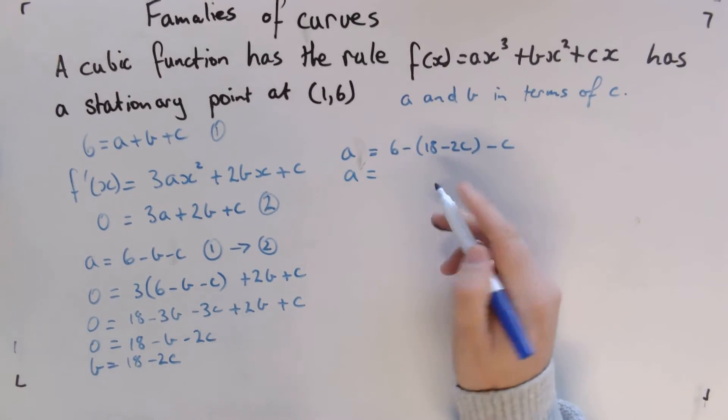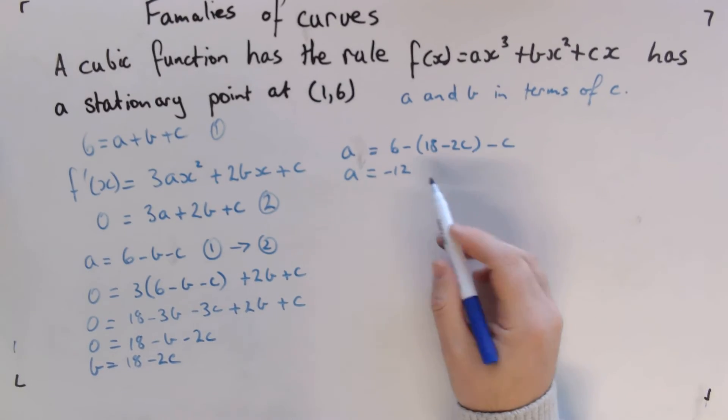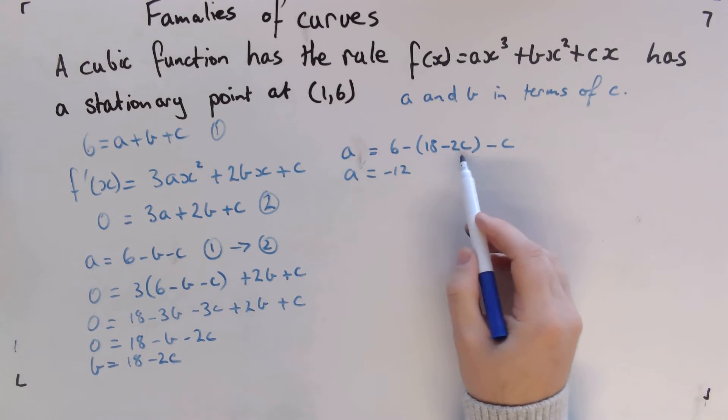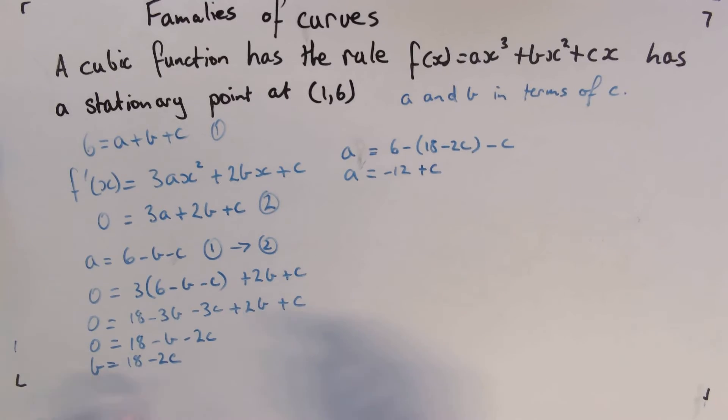I'm going to get a = 6 - 18 is -12, and then we've got take a negative, so that's +2c - c gives us +c. So we end up with our a value and our b values there.